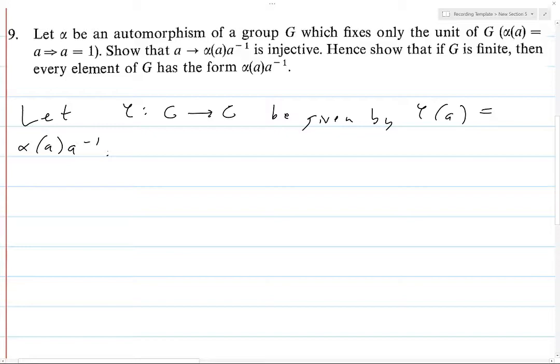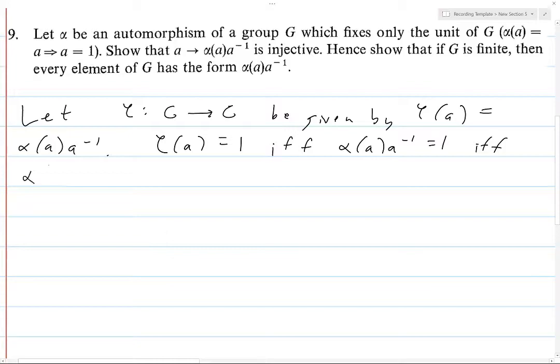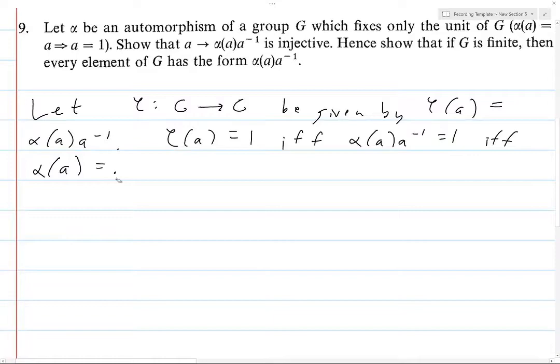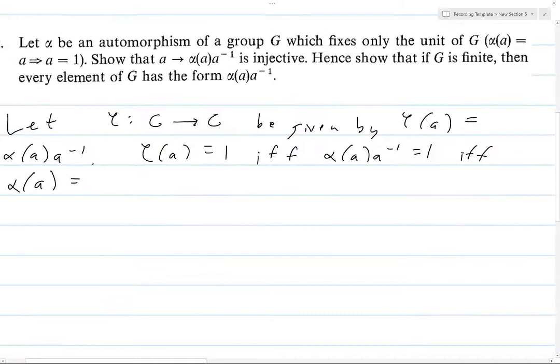So let's see here, phi of a equals one, one being the identity of G. If and only if alpha of a times a inverse equals one. That holds if and only if multiplying on both sides by a. This is if and only if alpha of a equals a. But that's by definition if and only if a equals one.